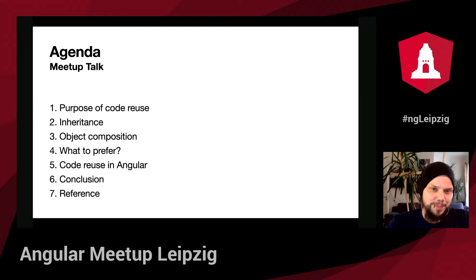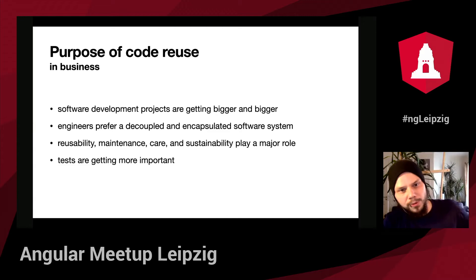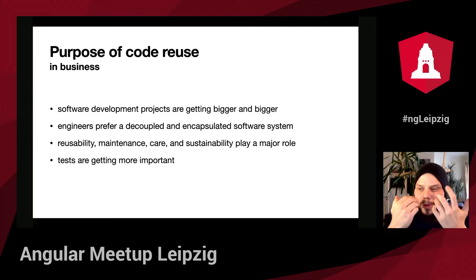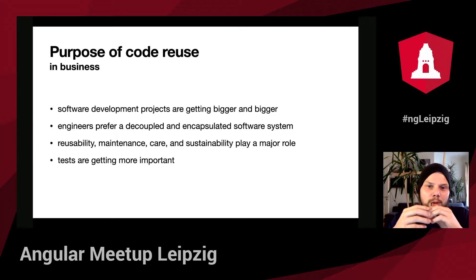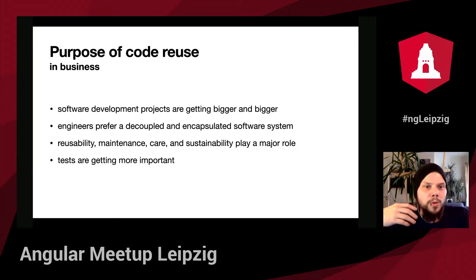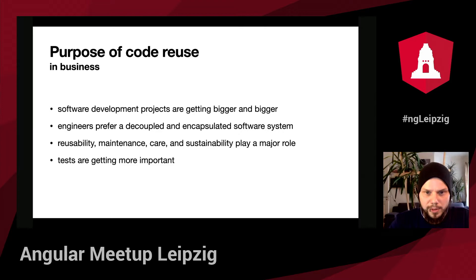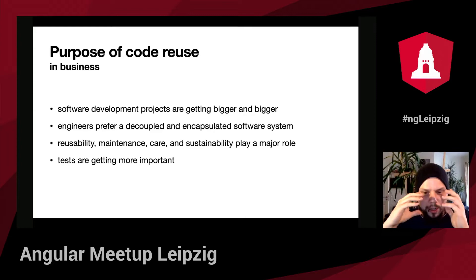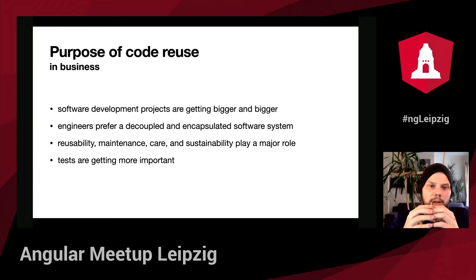First, we start with the purpose. These days for our applications, a decoupled and encapsulated software system is ever more relevant, because software projects are getting bigger and bigger, the code is becoming more complex, and we have many frameworks and ideas spread across the world. So reusability, maintenance, and sustainability play a major role in our software projects. Experienced engineers prefer decoupled and encapsulated software systems, because we need to decouple and reuse code to keep systems manageable.